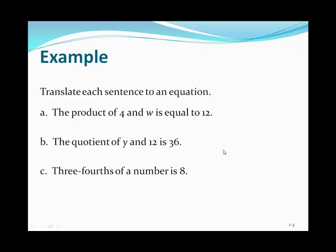Let's take a look at the first one: the product of 4 and w is equal to 12. The product, remember, is multiplication — so multiplying 4 and w, with an equal sign, equals 12.